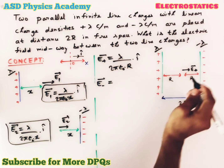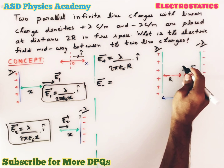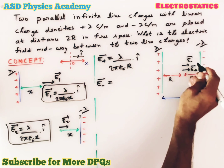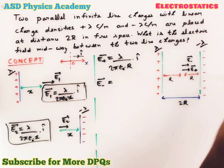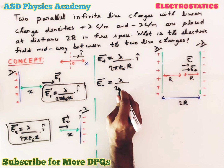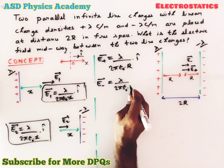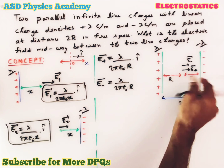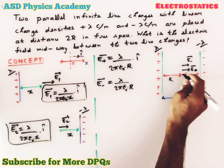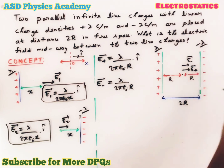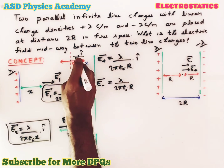Similarly, due to the negative line charge, the direction of the electric field will be towards the line charge. This is E-minus, given by lambda by 2 pi epsilon-naught r, where r is the distance between the point and the line charge, and the direction is towards the positive x direction, so unit vector i-cap.